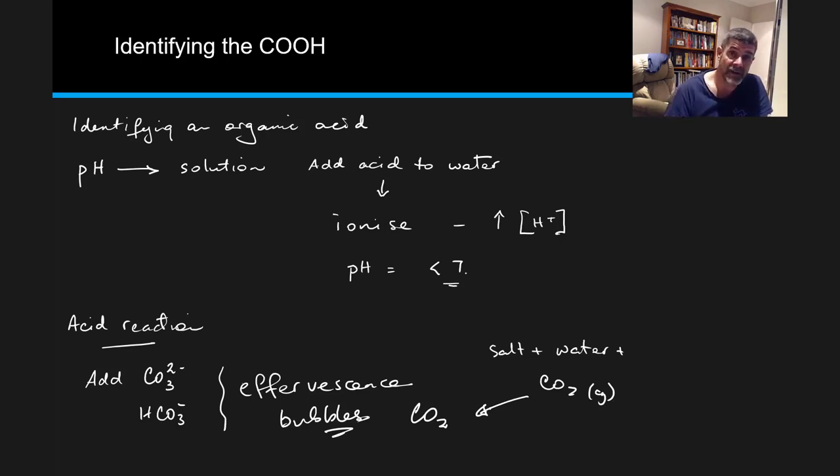If there's no reaction with bromine water, we can proceed to the oxidation step. This will tell us not only whether a hydroxyl group is present, but also whether it's on an end carbon, a middle carbon, or a carbon attached to three other carbons.